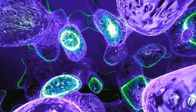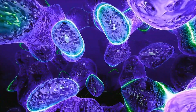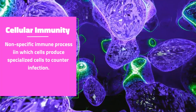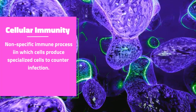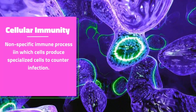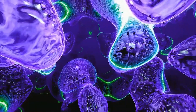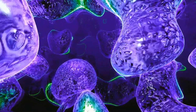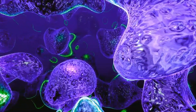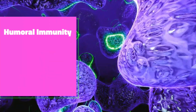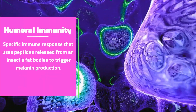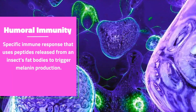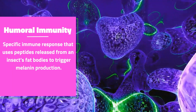The hemocytes present in the insect's circulatory system are an example of cellular immunity. Cellular immunity is the immunity provided by hemocyte offense, in which either a single hemocyte absorbs an invader in a process known as phagocytosis, or multiple hemocytes encapsulate a larger threat. The other immune process possessed by insects is humoral immunity, in which peptides stored in organs known as fat bodies are released into the rest of the insect's body, triggering melanin production.